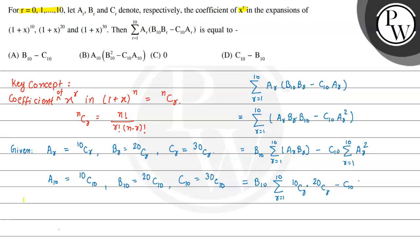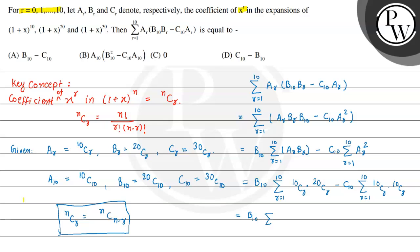For summation of ar·br: ar is 10Cr and br is 20Cr. Using the property nCr equals nC(n minus r), we can write br as 20C(20 minus r). For ar squared, it becomes 10Cr multiplied by 10Cr, which using the property becomes 10Cr multiplied by 10C(10 minus r). So we write B10 times summation of 10Cr·20C(20 minus r) minus C10 times summation of 10Cr·10C(10 minus r), with r varying from 1 to 10.